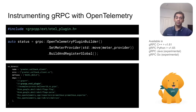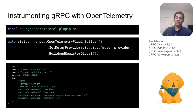Speaking from a C++ perspective, all we need to do is use the OpenTelemetry plugin builder, set it up with OpenTelemetry's meter provider — which should have the exporter configuration, for example Prometheus — and then take the proper build-time dependency on the plugin and let it run.